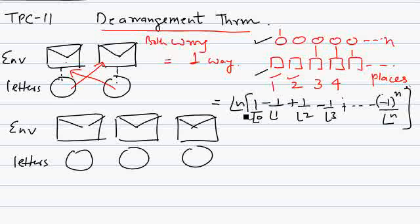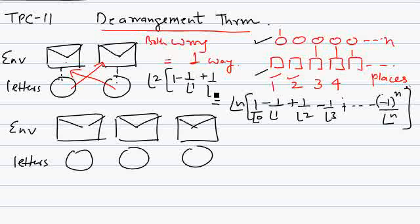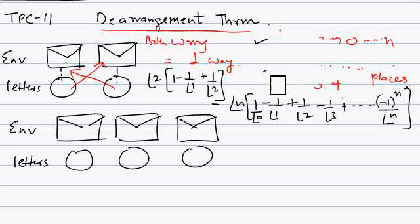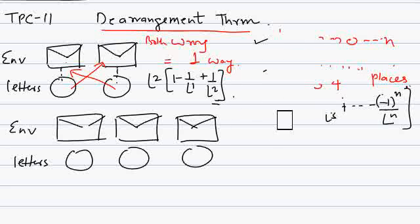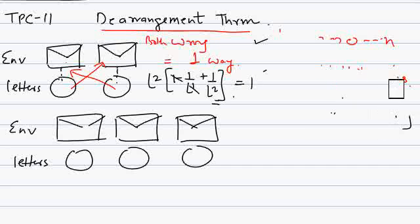To place n objects in n corresponding positions so that no object is placed in its corresponding position — n objects, n places, none placed correctly. In this case, applying the formula for n=2: 2 factorial times (1 minus 1 by 1 factorial plus 1 by 2 factorial), you get the answer 1. You can check — the answer is 1.